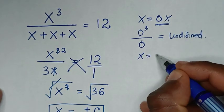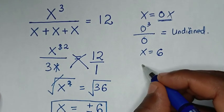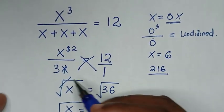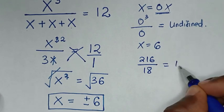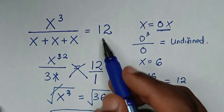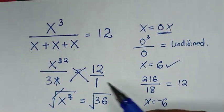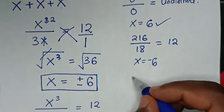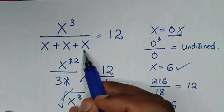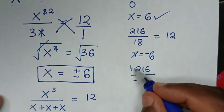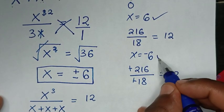For x equal to 6, we'll substitute: it will be 6 power 3 is 216, over 6 plus 6 plus 6 is 18. Then 216 divided by 18 is equal to 12, which is the same — so x equal to 6 is the correct answer. And for x equal to negative 6, it will be negative 6 power 3 is negative 216, over negative 6 plus negative 6 plus negative 6 is negative 18. Negative 216 divided by negative 18 is equal to 12, so this is also the correct answer.